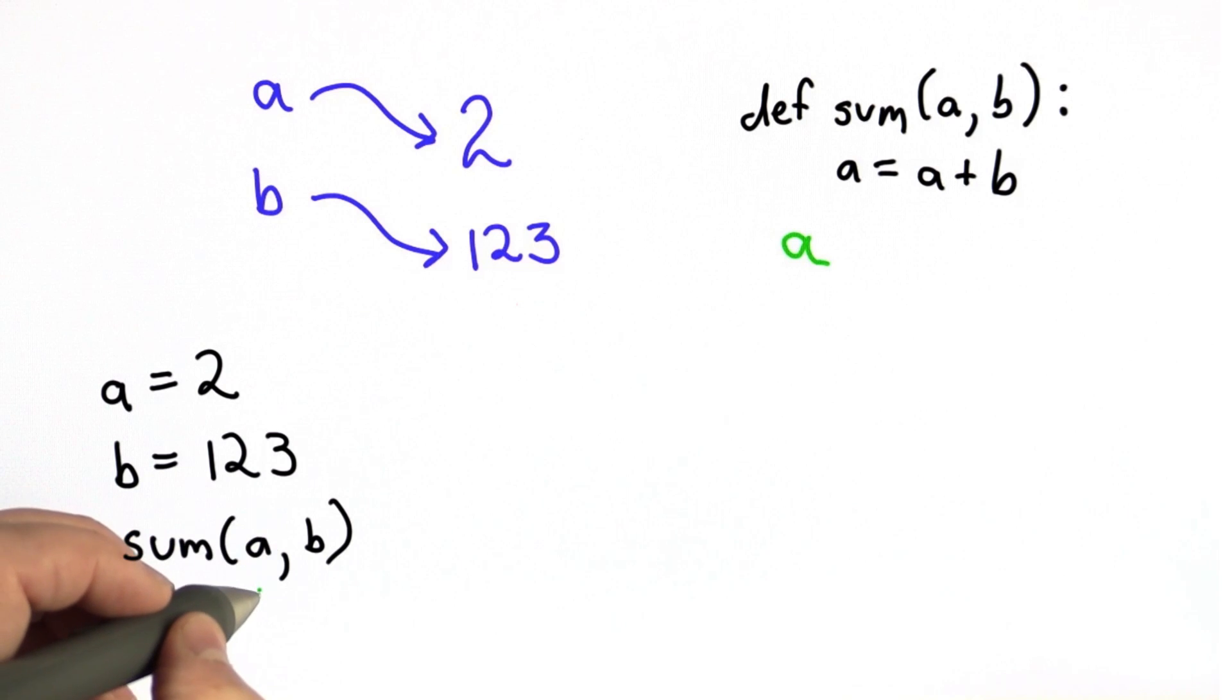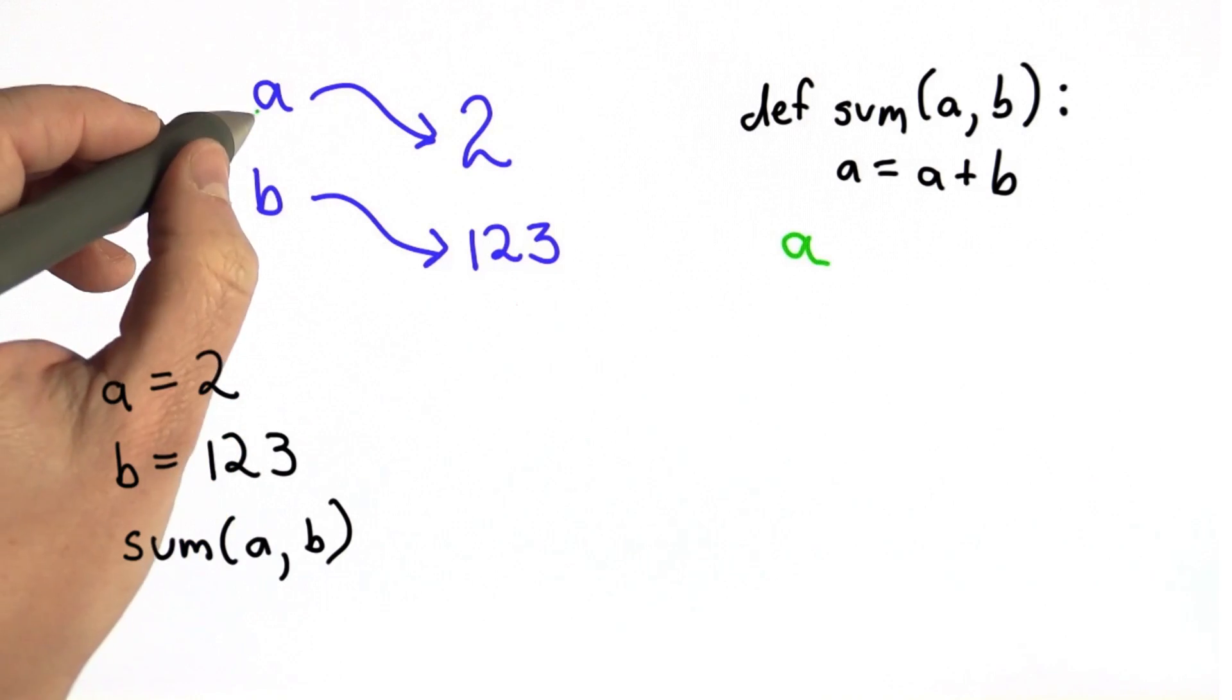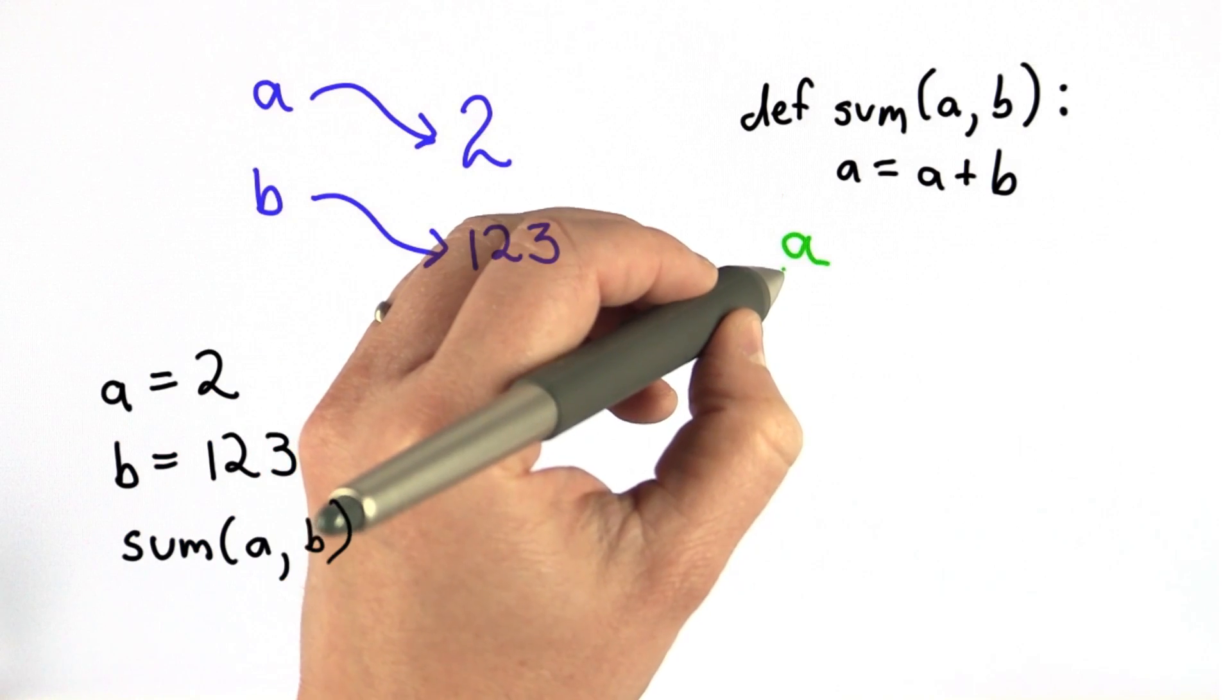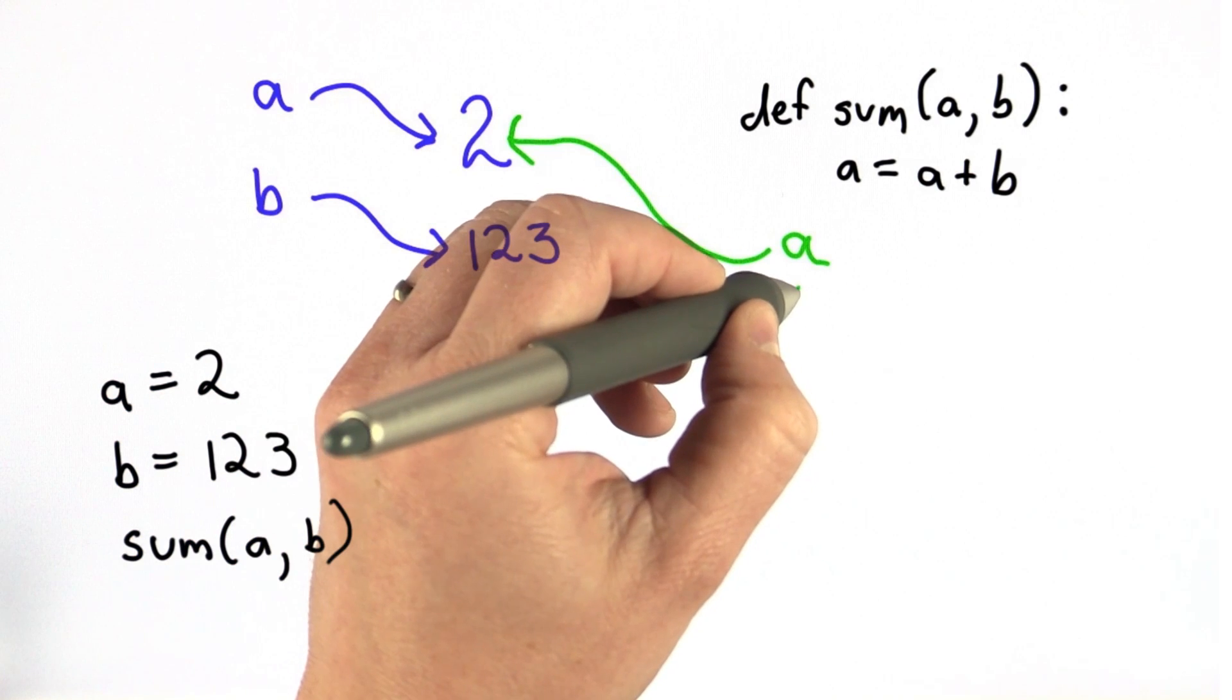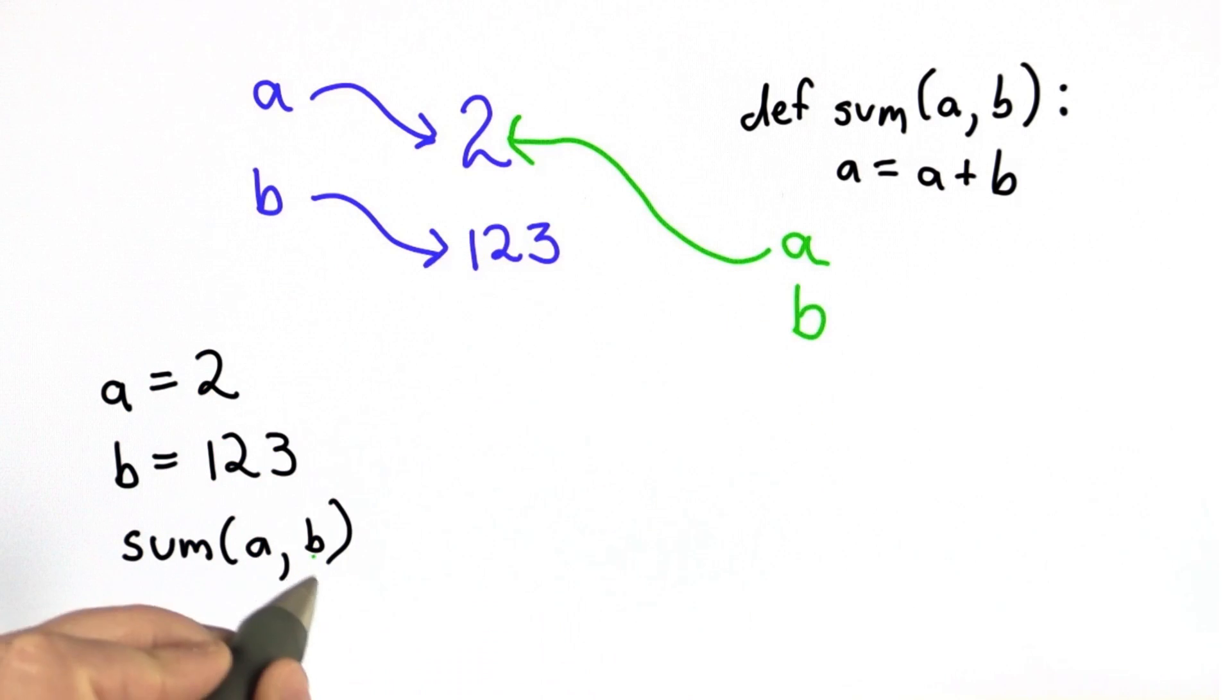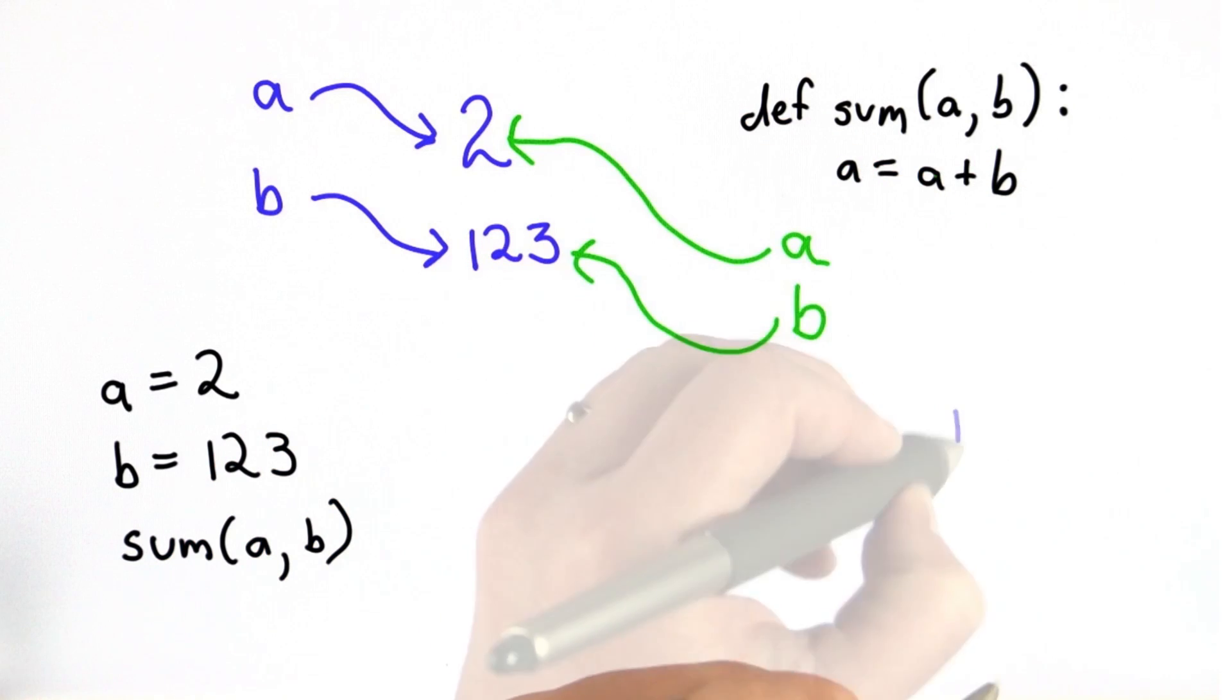So to know what the value is, we evaluate the name a. We get the value 2. This a will refer to the value 2. B will refer to the value passed in as b. That's going to be the number 123. And then when we run sum, we do the assignment. That's going to produce the new number adding 2 plus 123. We get the value 125.